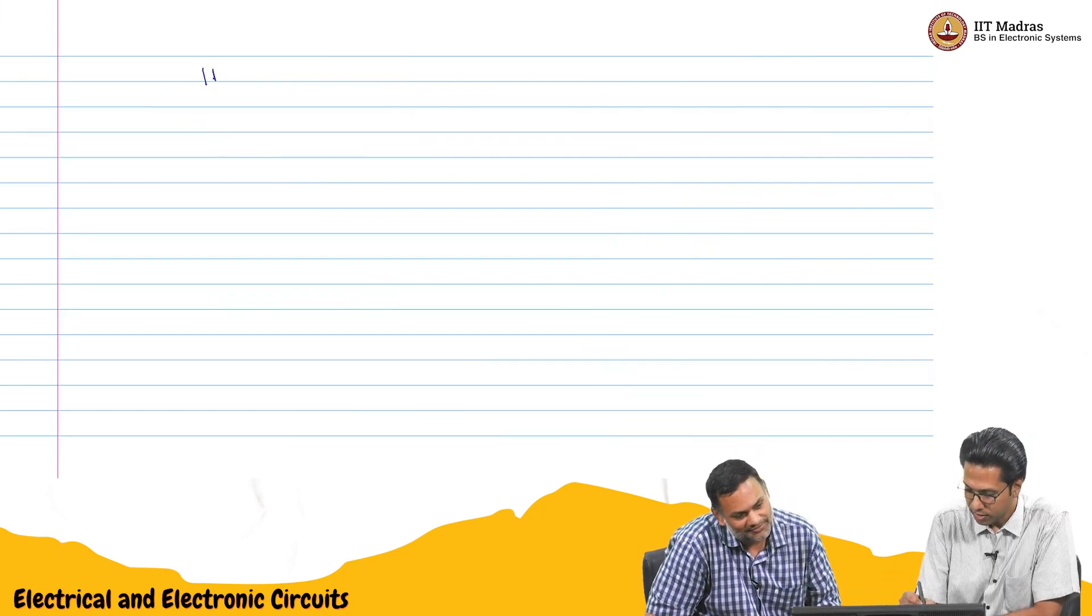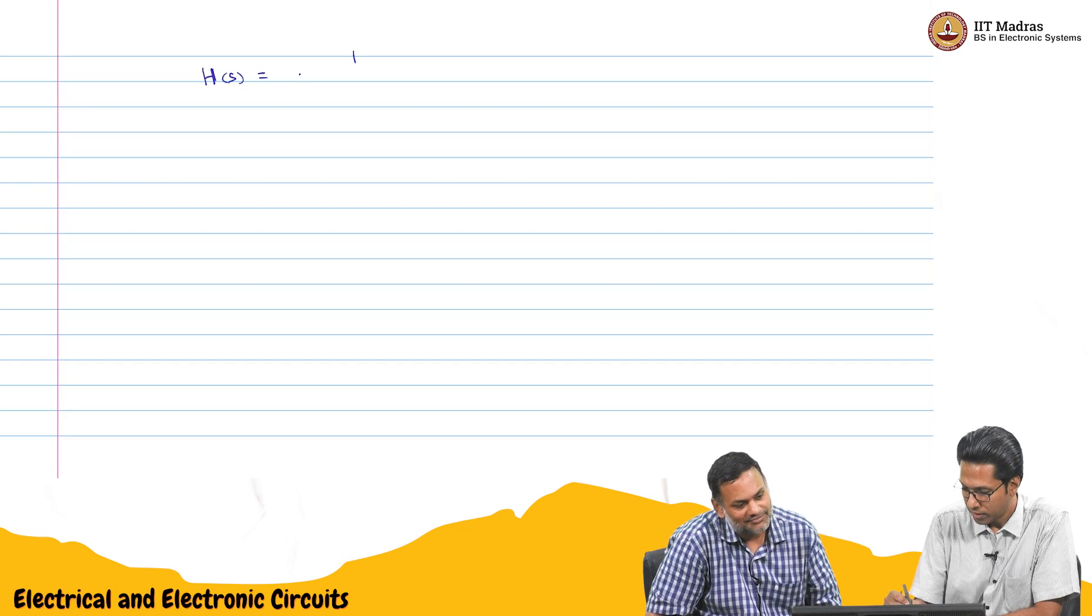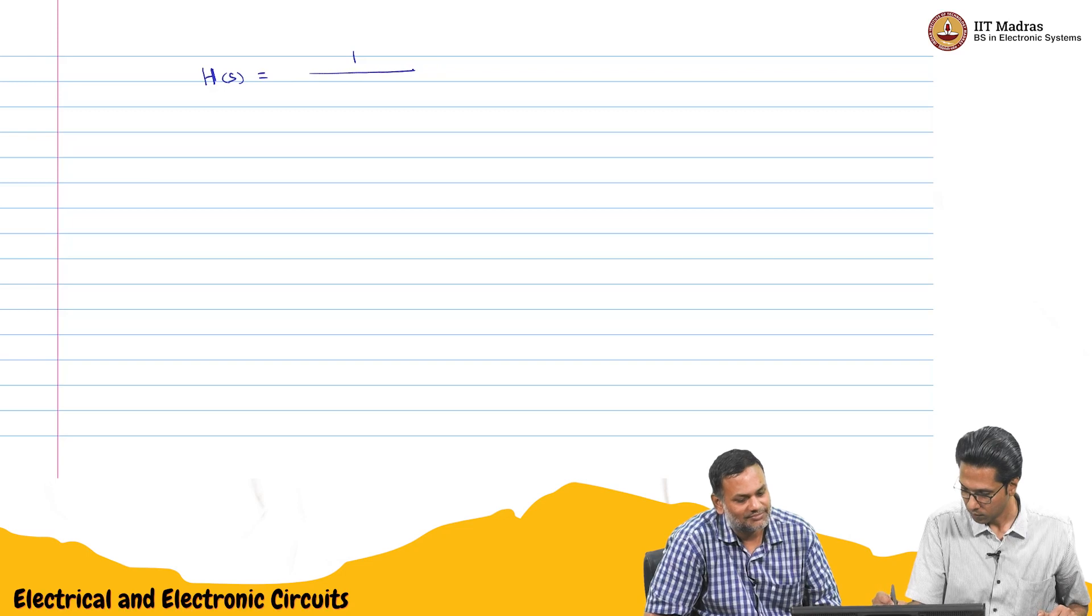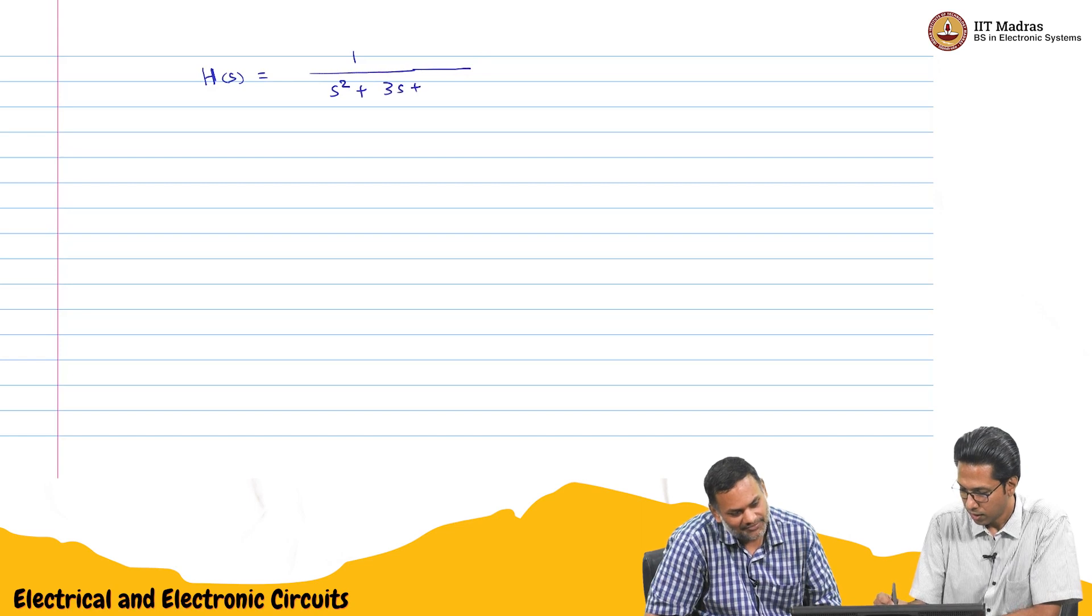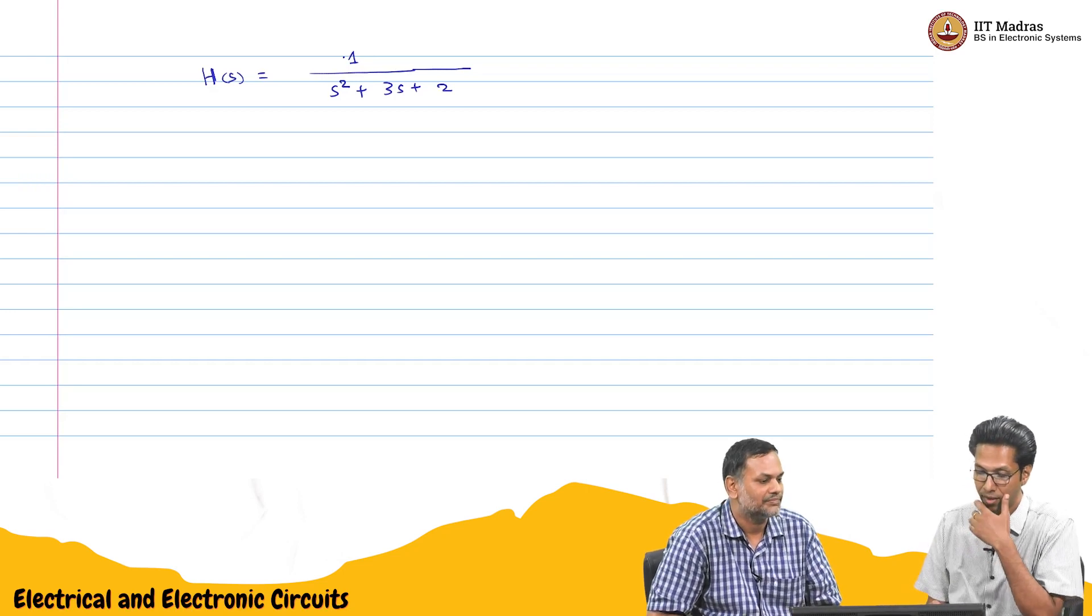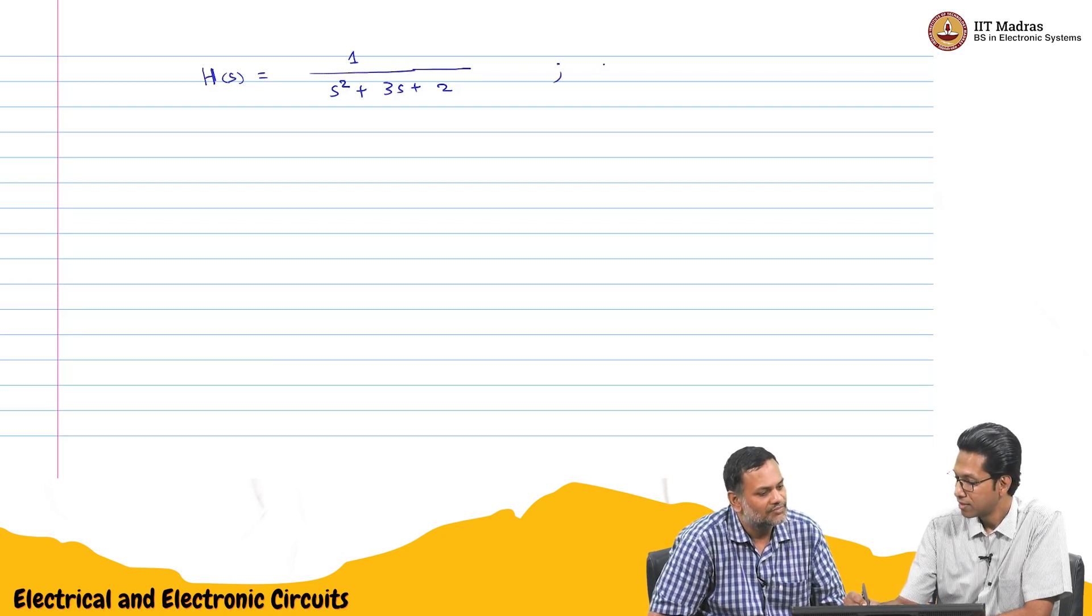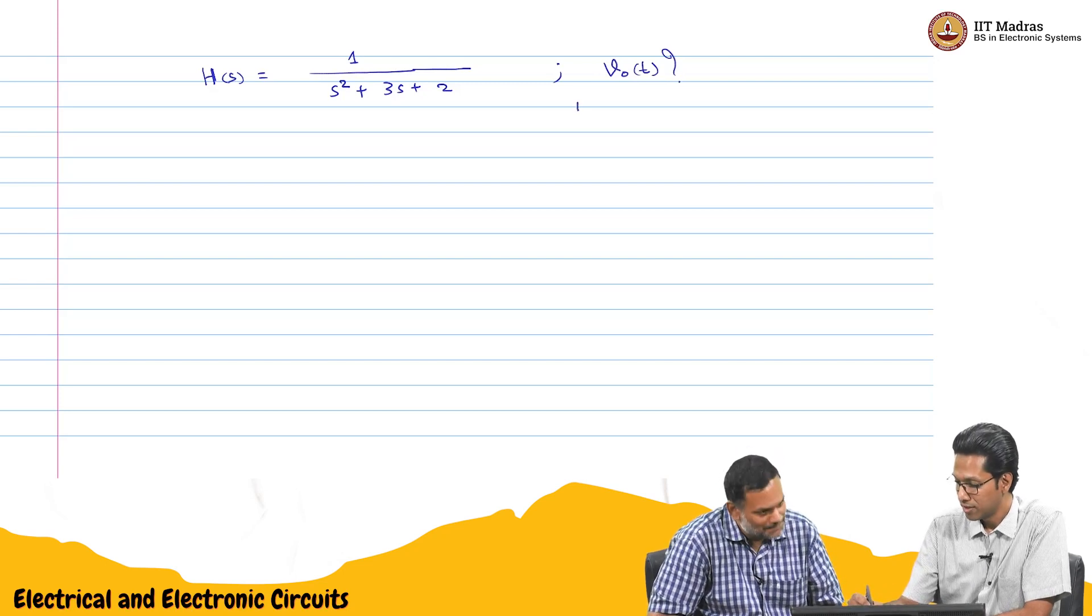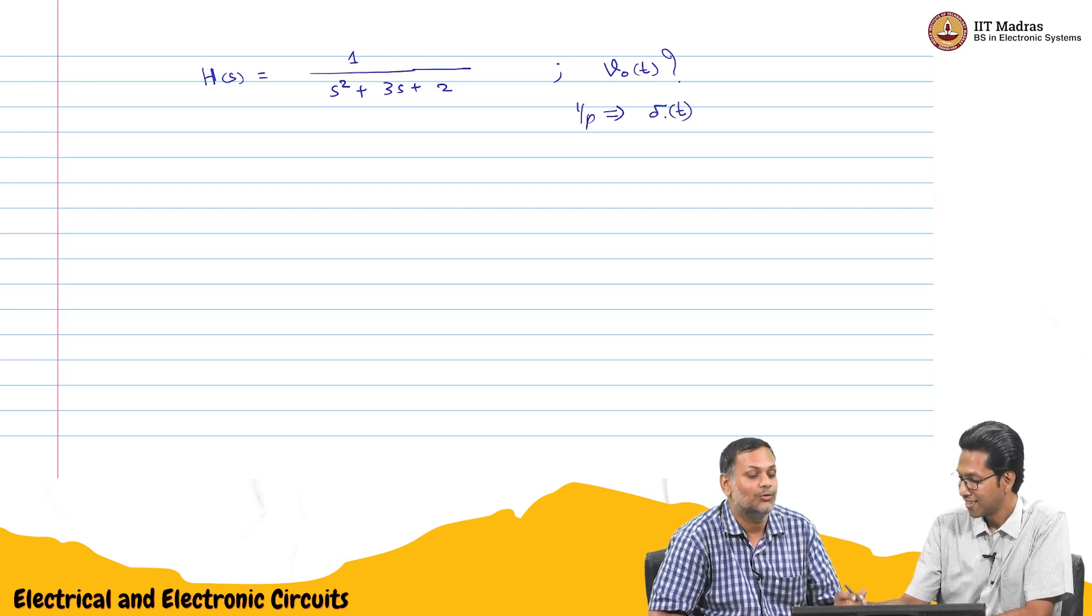Let us say H of s is 1 by s square plus 3s plus 2. And the question is, what is the v naught of t if the input is delta of t?